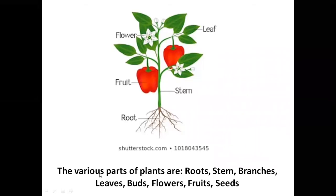The various parts of plants are roots, stem, branches, leaves, buds, flowers, fruits, seeds. We learnt about the parts of plants. The root is the part of the plant that grows underground, and the other parts grow above the ground.